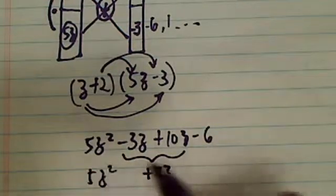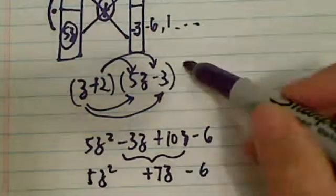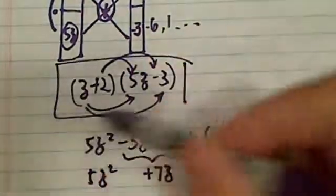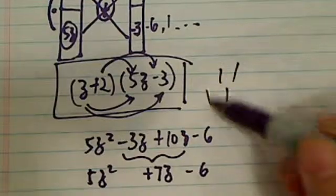So 5z squared, plus 7z, minus 6. So our answer is correct. Hope this helps, and have a confident day.